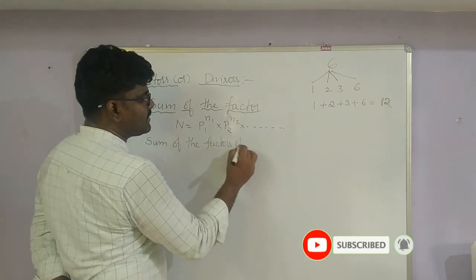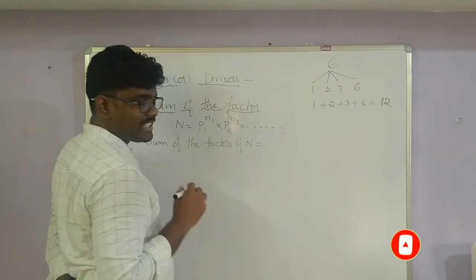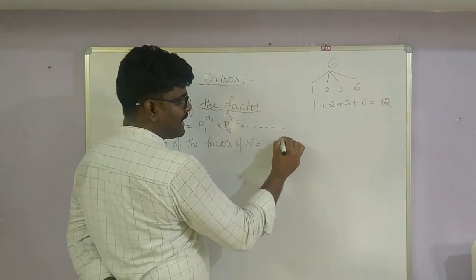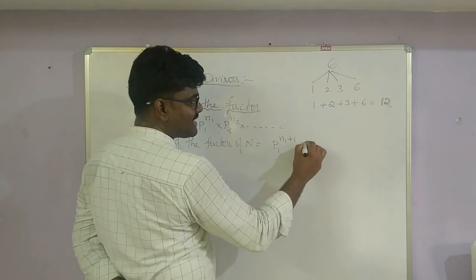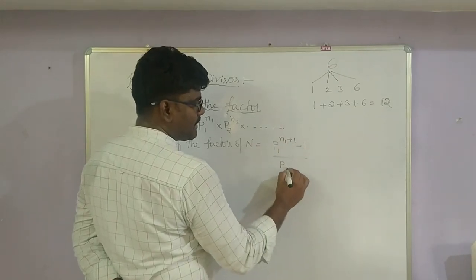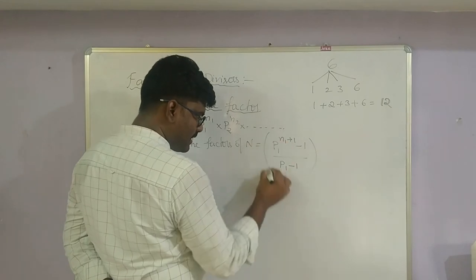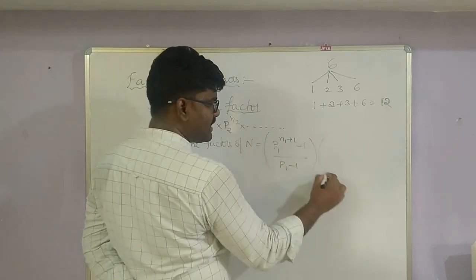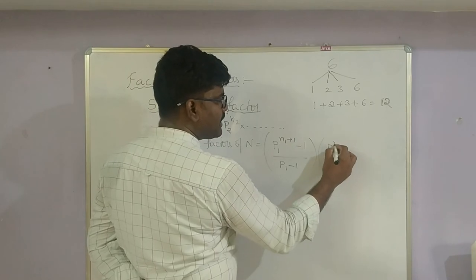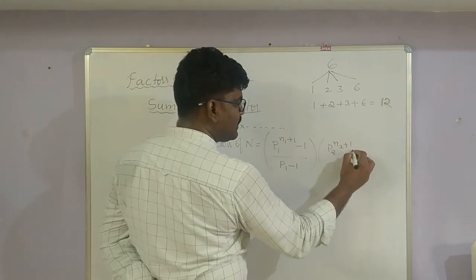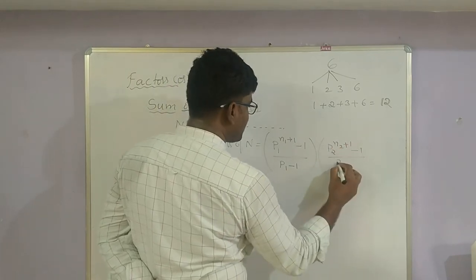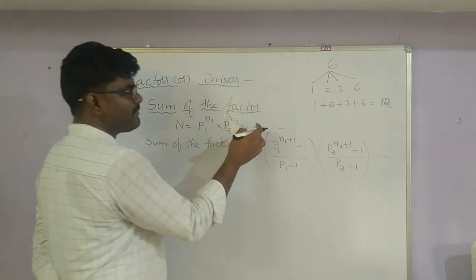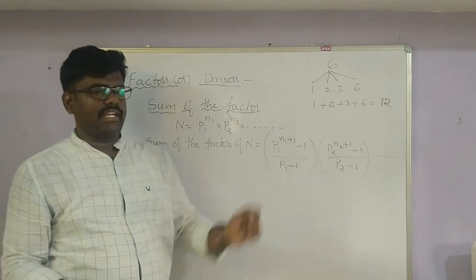The sum of factors of N formula is: [(p1^(n1+1) − 1) / (p1 − 1)] × [(p2^(n2+1) − 1) / (p2 − 1)] × ... and so on, for each prime factor. However many prime factors we have, we write that many terms.